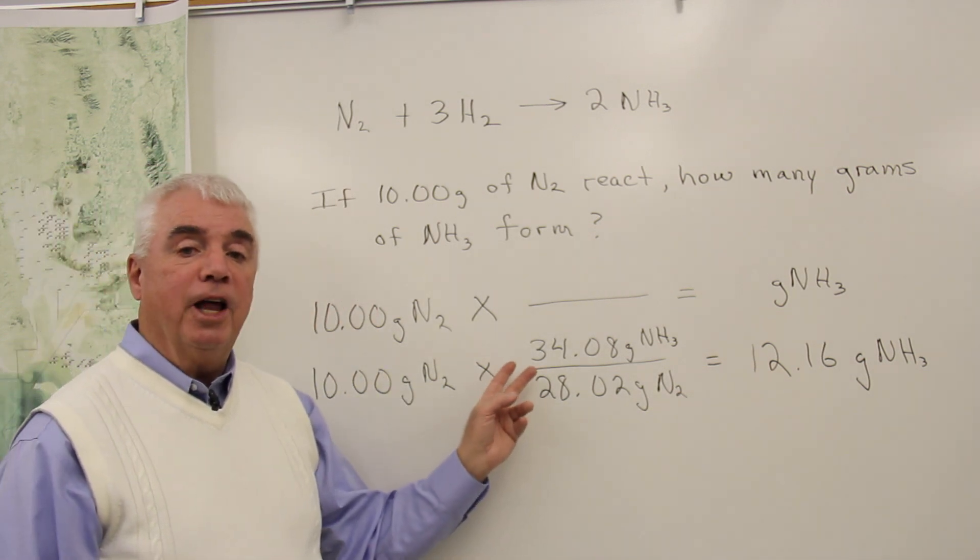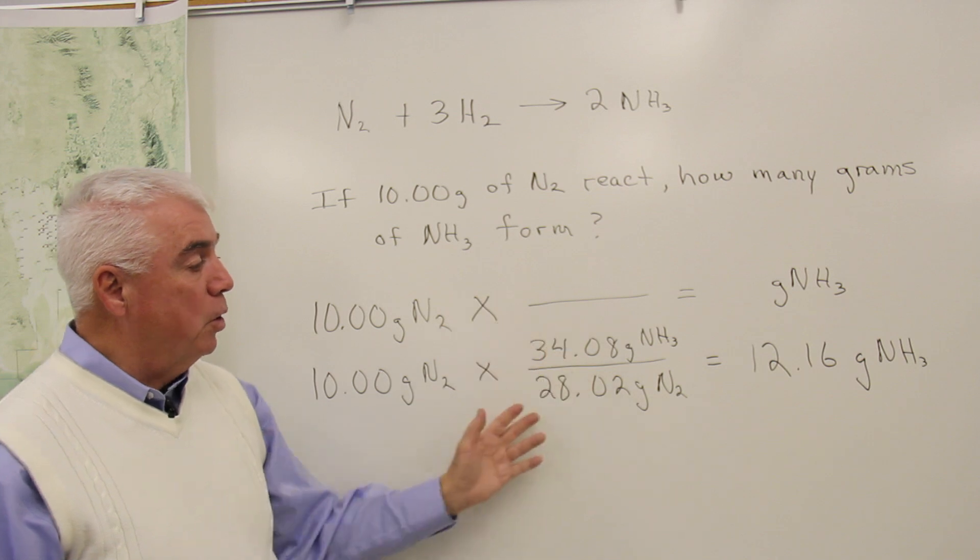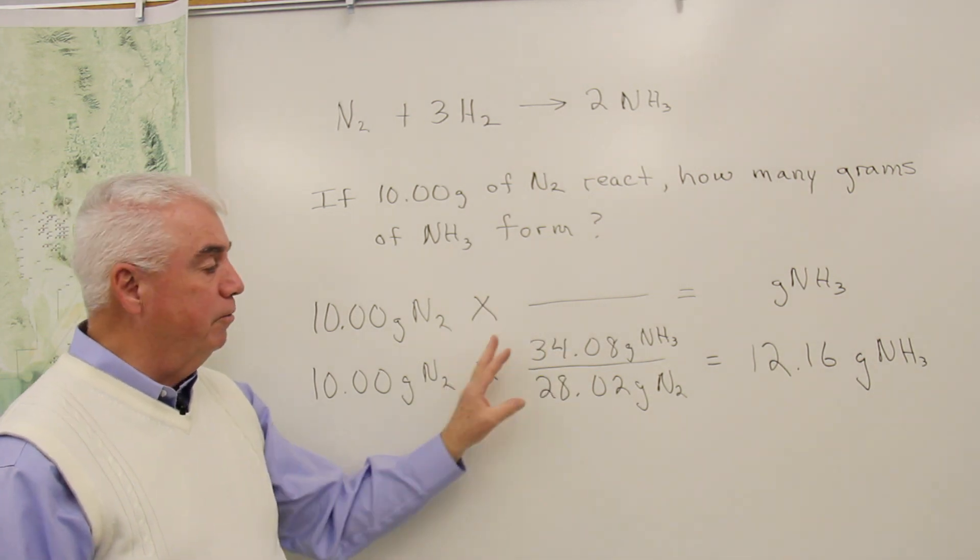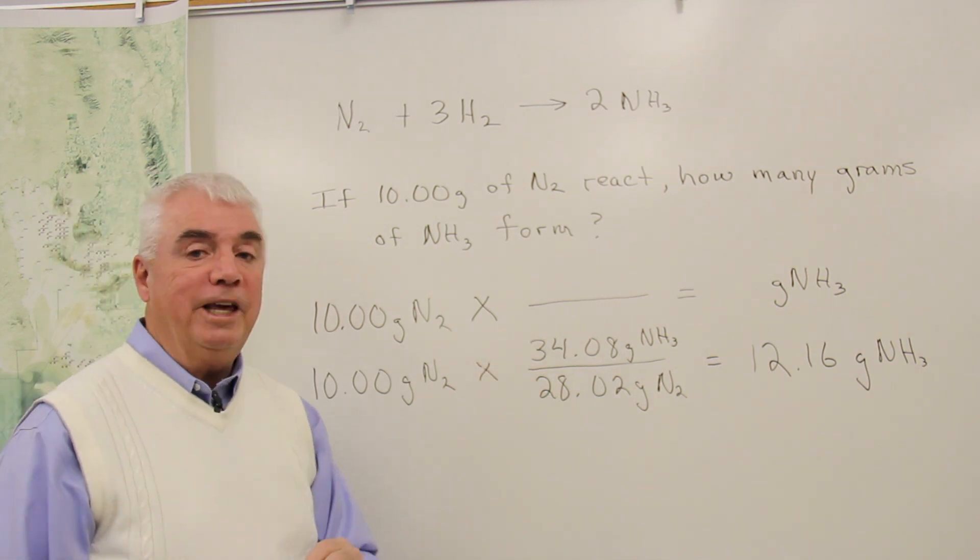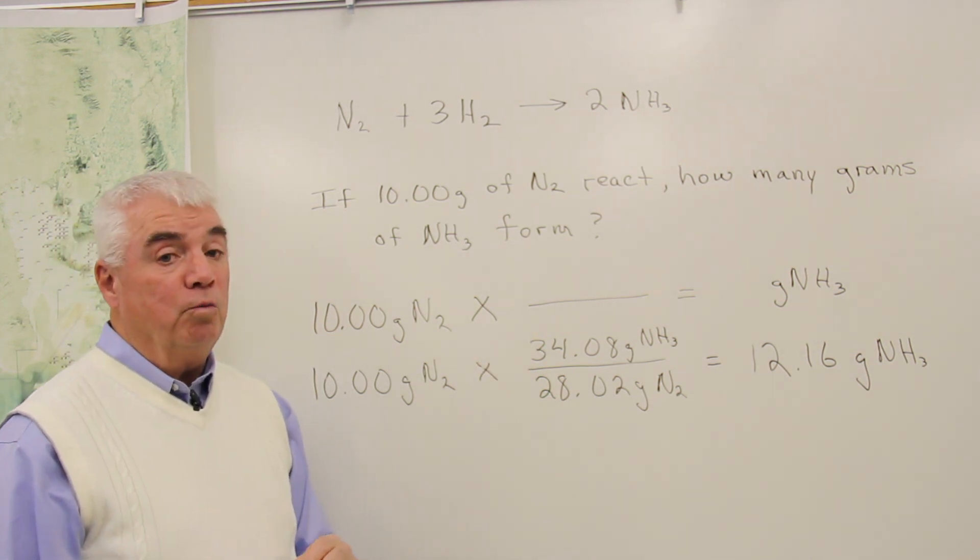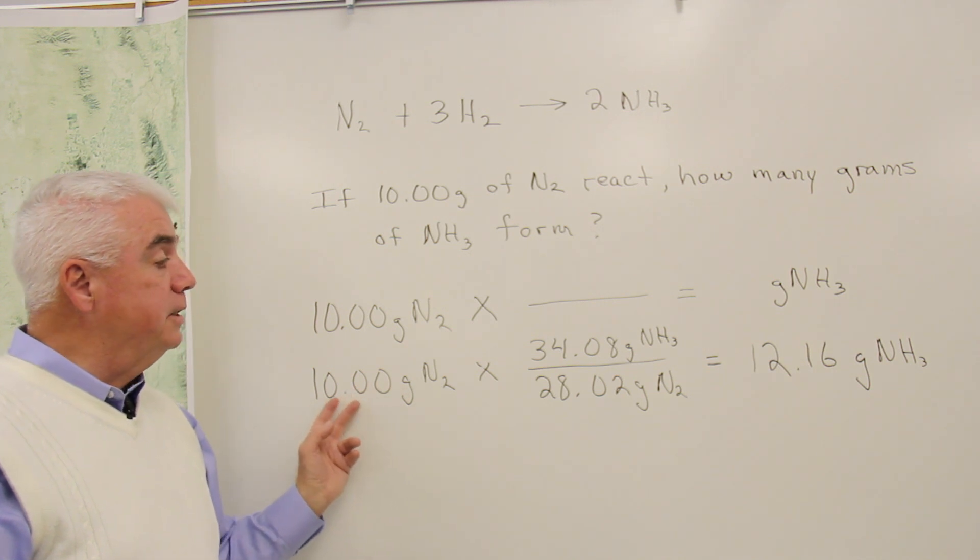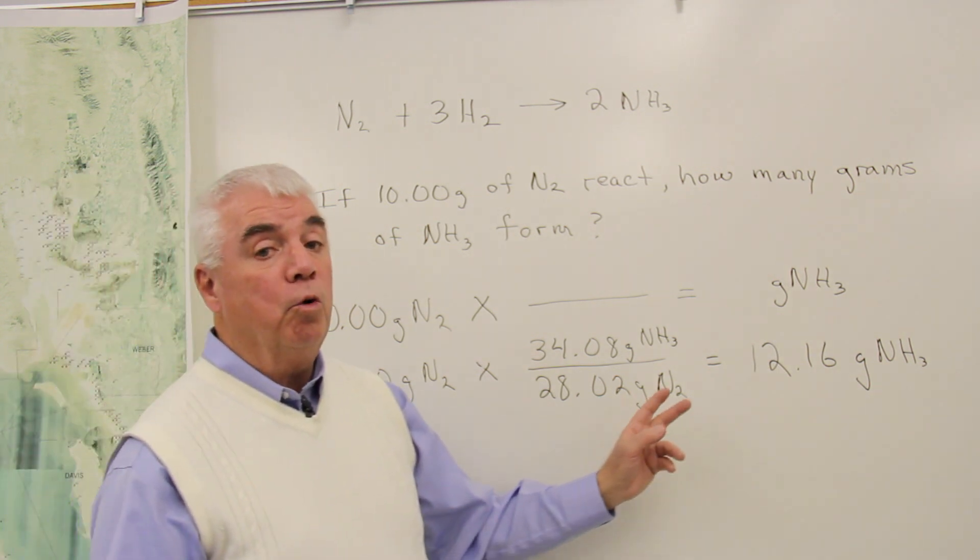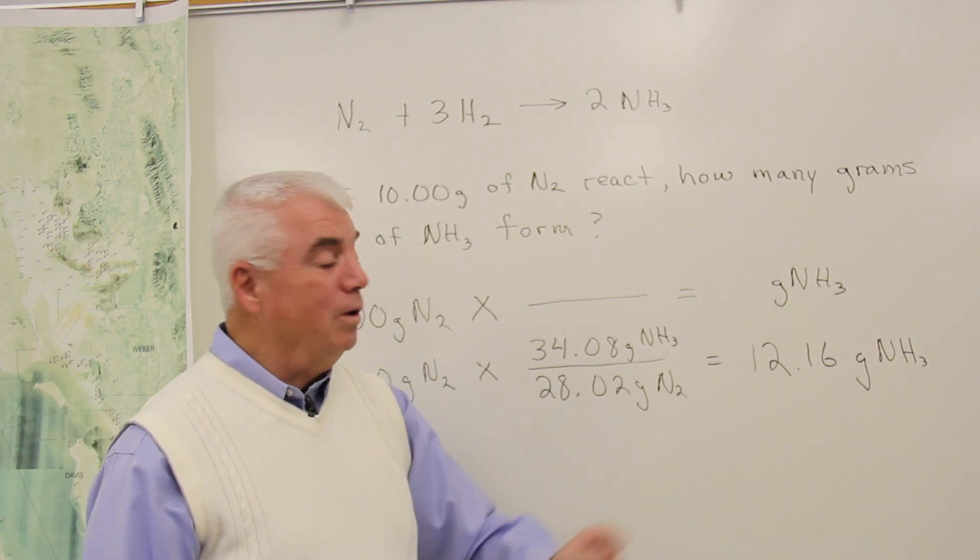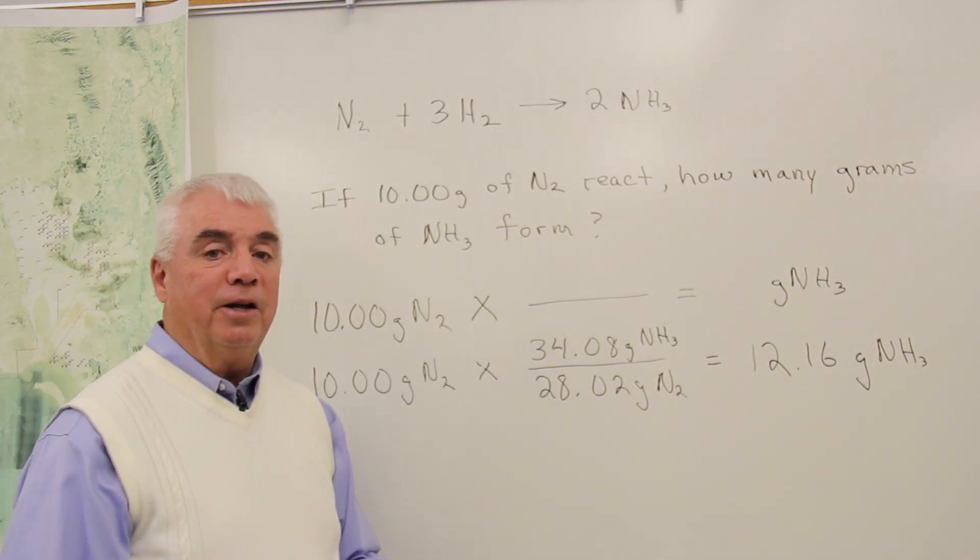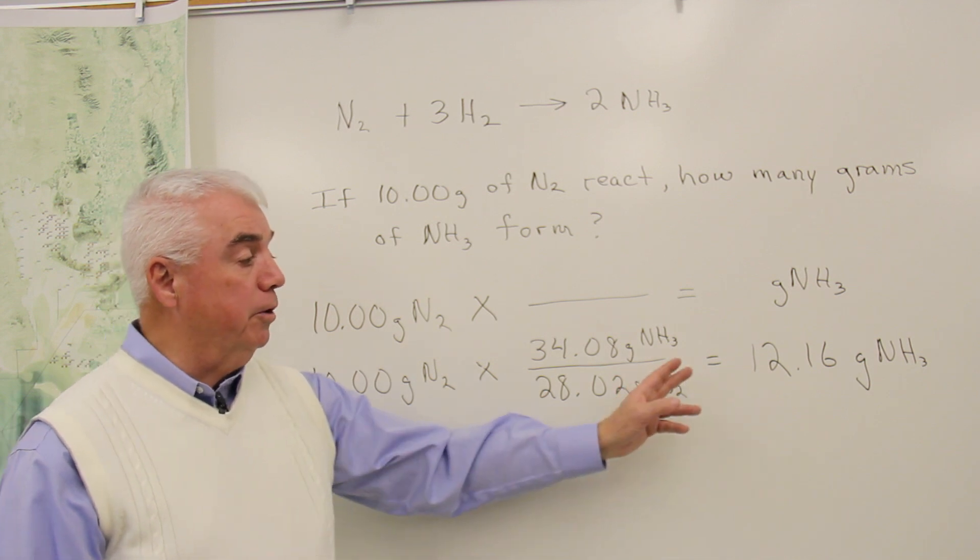One other thing that's nice to do, it's called approximation. You sort of look at the numbers and see if they make sense. Well, 34 over 28 is a little more than 1. A little more than 1 times 10 is going to be a little more than 10. Hey, my answer's okay. Once in a while, you hit the wrong button on a calculator, and you come up with a crazy answer. So it's nice to look back and just sort of approximate.